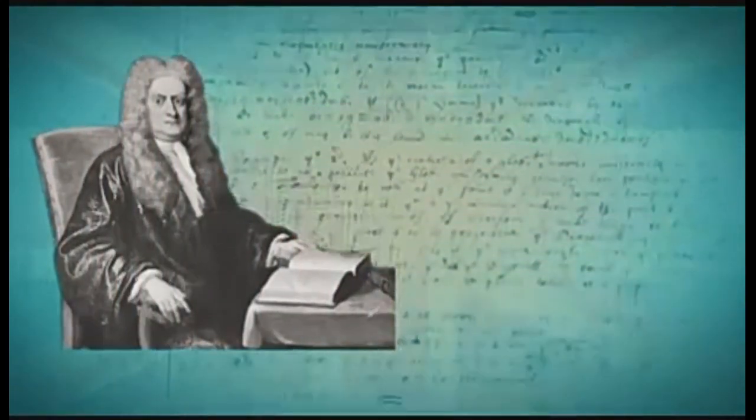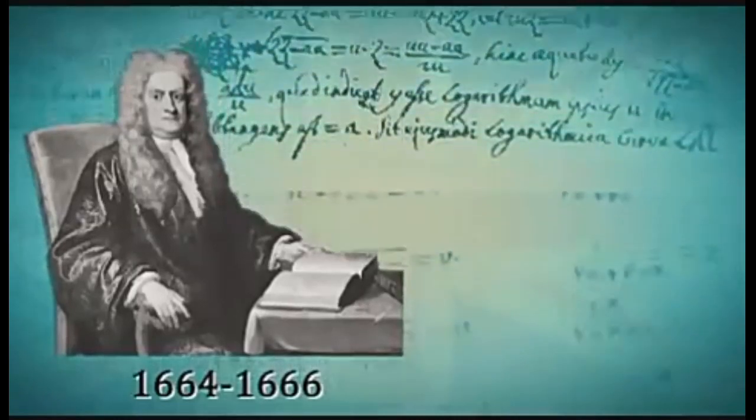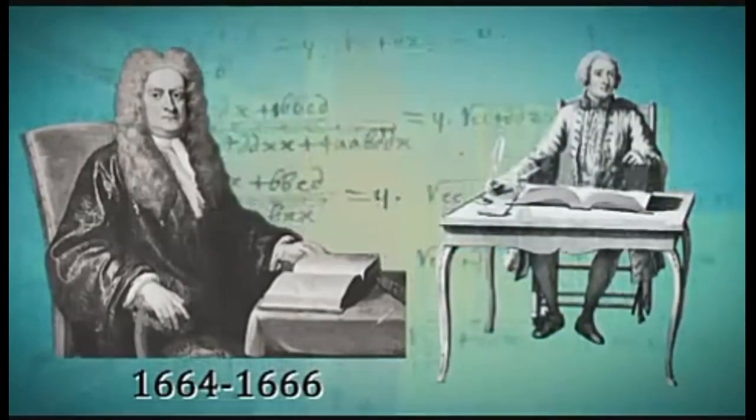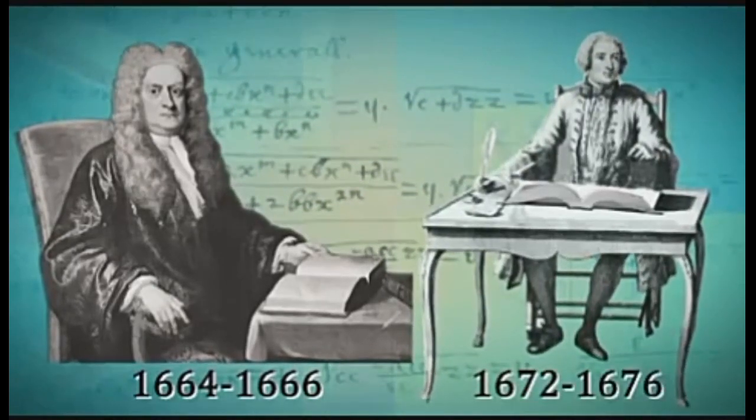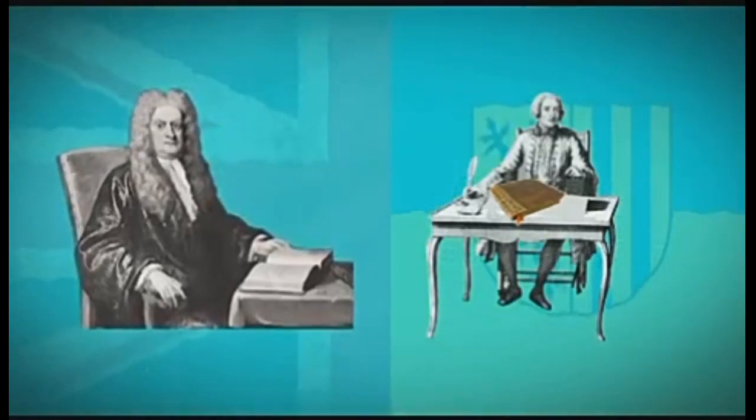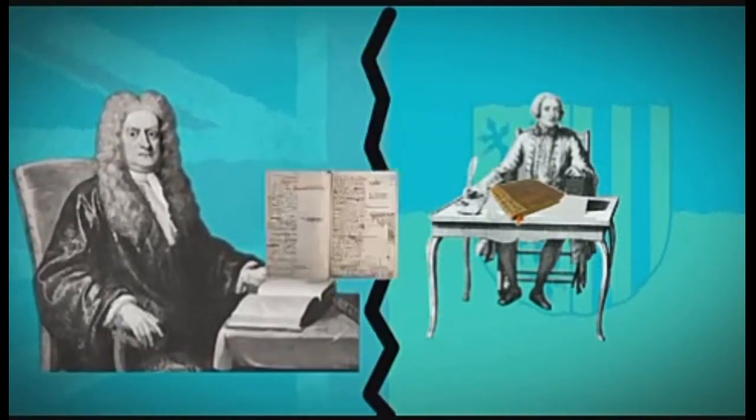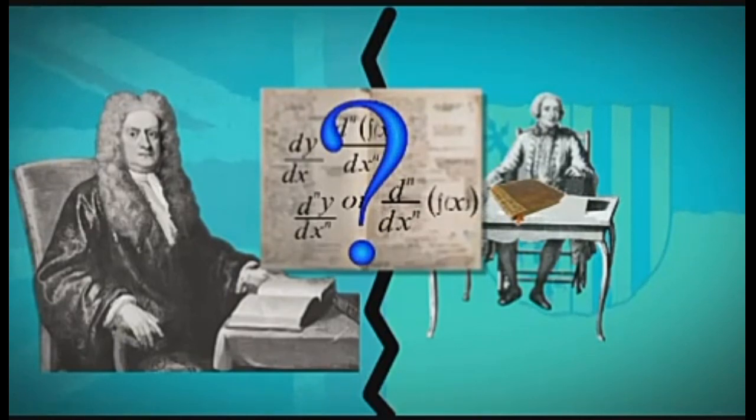Now here's how the controversy arose. Newton started working on his theories of calculus between 1664 to 1666 but did not publish. Leibniz worked on it between 1672 to 1676 but published earlier. But because Newton was the bigger name, everyone wondered whether Leibniz had reached his findings independently or if he had stolen the ideas.